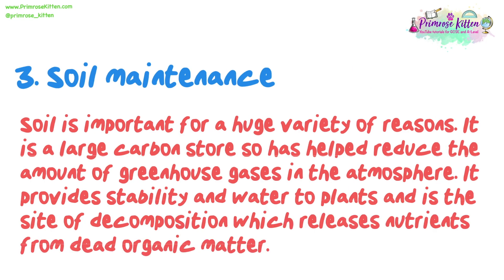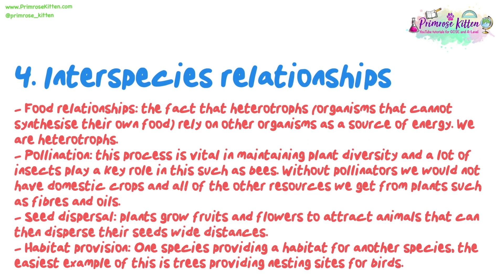Number three: soil maintenance. Soil is important for a huge variety of reasons. It is a large carbon store so has helped reduce the amount of greenhouse gases in the atmosphere. It provides stability and water to plants and is the site of decomposition, which releases nutrients from dead organic matter. Number four: interspecies relationships. Food relationships — heterotrophs, organisms that cannot synthesise their own food, rely on other organisms as a source of energy; we are heterotrophs. Pollination — this process is vital in maintaining plant diversity and a lot of insects play a key role in this, such as bees. Without pollinators, we would not have domestic crops and all of the other resources we get from plants such as fibres and oils.